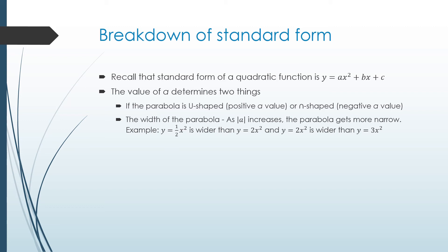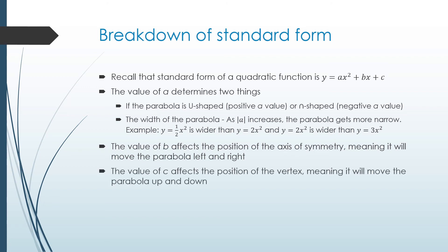The width of the parabola is also determined by a. As the absolute value of a increases, the parabola gets more narrow. For example, y equals one half x squared is wider than y equals two x squared, and y equals two x squared would be wider than y equals three x squared. The value of b is going to affect the positioning of your axis of symmetry, meaning it's going to move the parabola left and right. The value of c affects your position of the vertex, meaning it will move your parabola up and down.